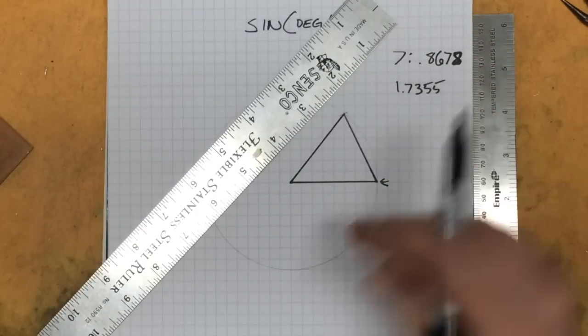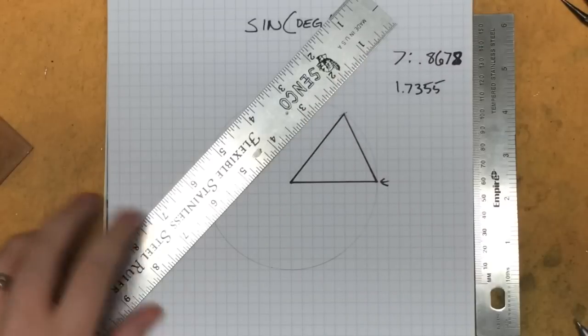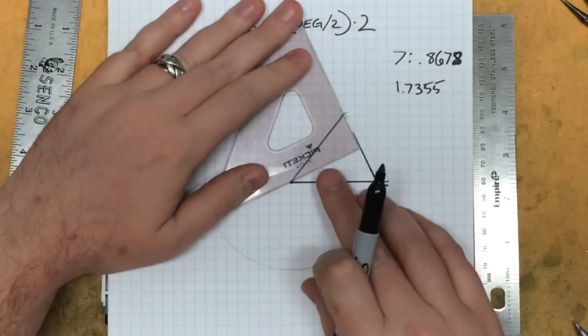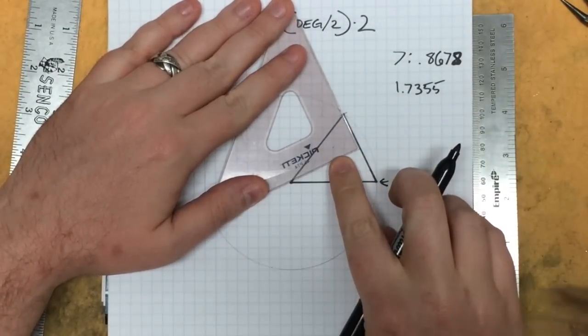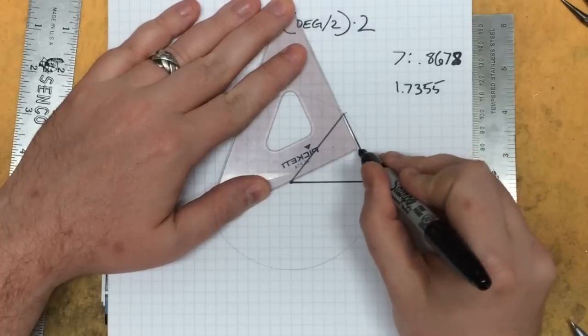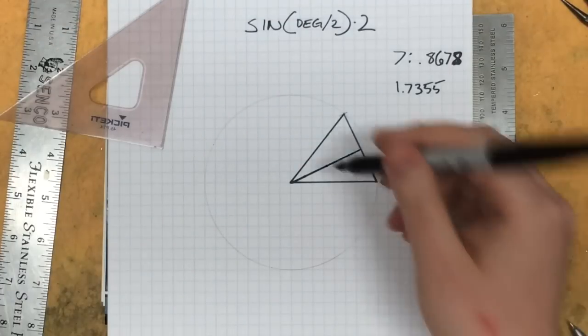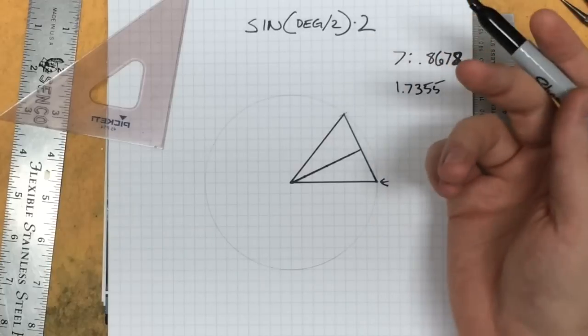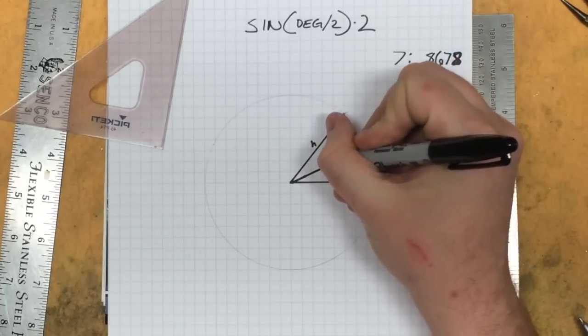The easiest way to get that, at least the easiest way I know of—and there may be an easier way, I'm no mathematician—is to turn this angle, which in this case is the entire span we're trying to get (360 divided by seven, that's how we're getting this angle), is simply to divide it in half. Divide the degrees in half and that's going to turn this into a right triangle, or rather two right triangles.